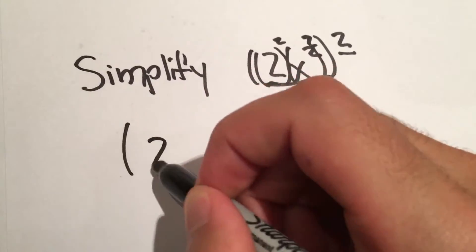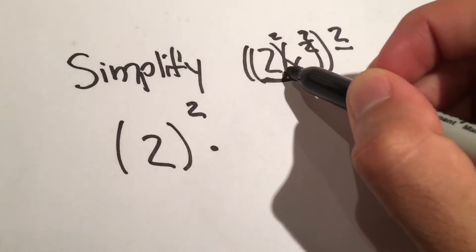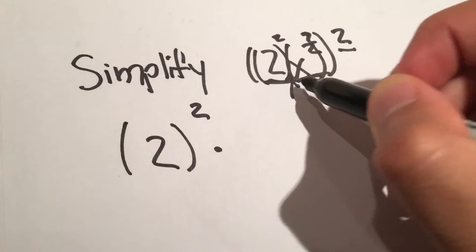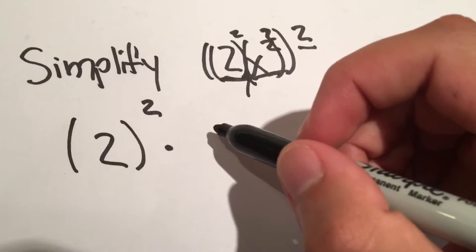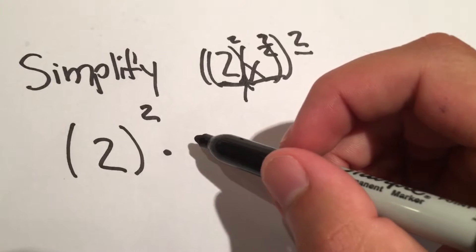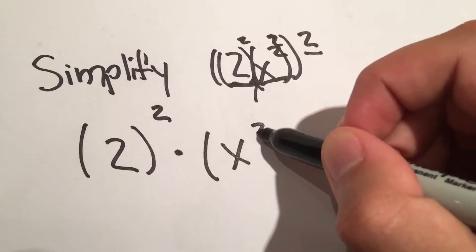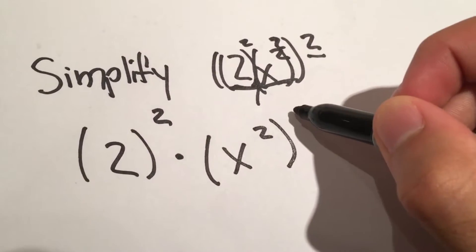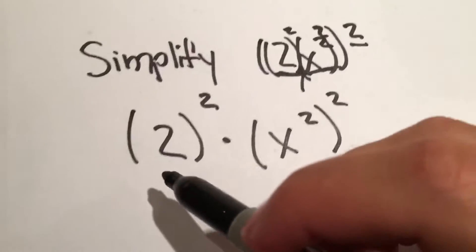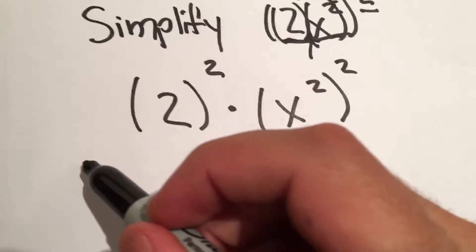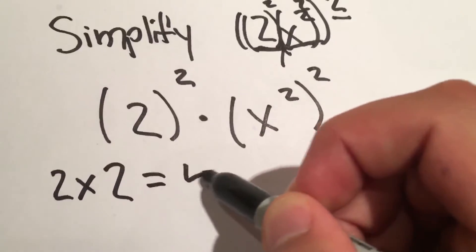Take 2 and square it — there's the multiplication symbol. Take x squared and square that. So 2 squared is just 2 times 2, which equals 4. Hopefully you have that memorized.